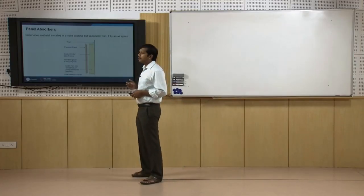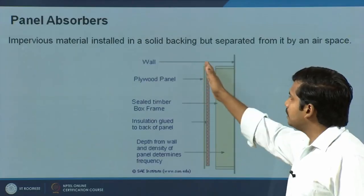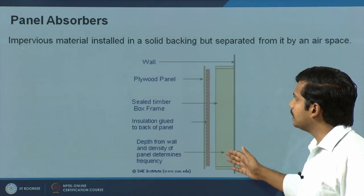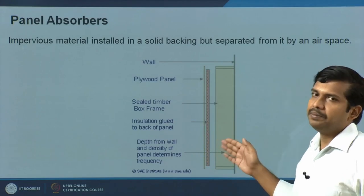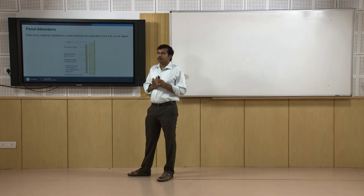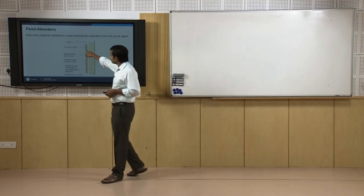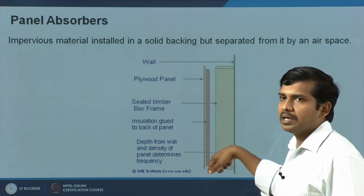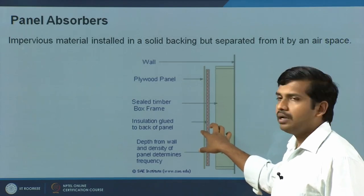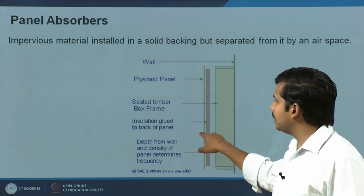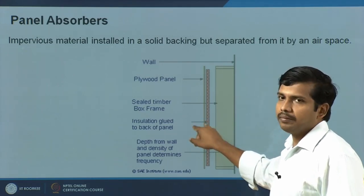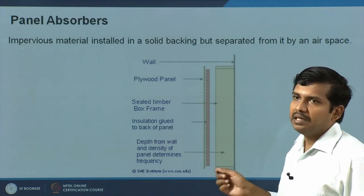The second type is the panel absorber. Imagine a thin plywood panel mounted on a frame with an air gap and the wall section behind. This also absorbs at a specific particular frequency bandwidth. The absorption is restricted to one or two specific bandwidths, which depends on the thickness of the panel, the area of absorption, the air gap available behind, and the density of the panel. Depending on these variables — density, thickness, and mounting distance — the absorption specifically varies.